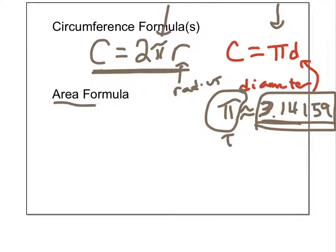Area formula, we're not going to talk too much about that today, but I thought I'd mention it. The area formula is pi r squared. Take the radius and square it, multiply it by pi.